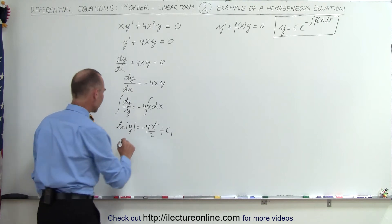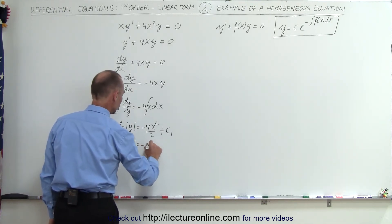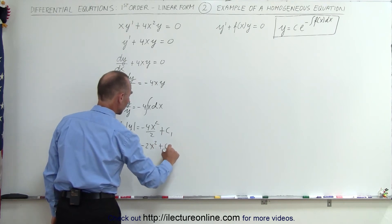I can simplify that, so this equals the natural log of y equals minus 2x squared plus some constant of integration.